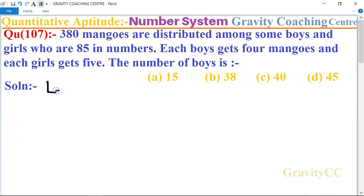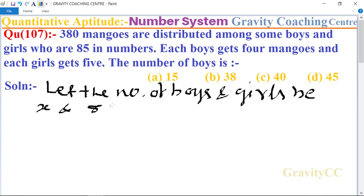In this question, first of all, let the number of boys and girls be x and 85 minus x.